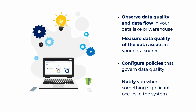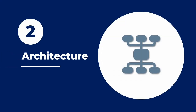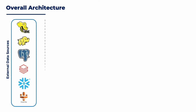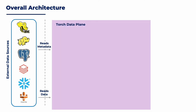With Torch, you will also be notified when something significant happens in your system. Now let's dive into Torch's architecture. Currently, Torch supports 23 different data sources and is made up of two parts: the data plane and the control plane.